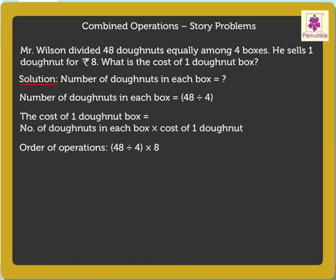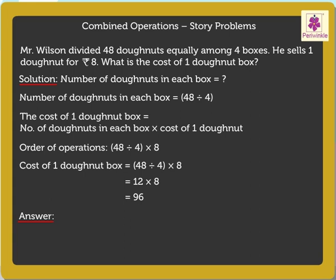Here, we use the division and multiplication operations to find the answer. The cost of one doughnut box is equal to 12 into 8, which is equal to 96. Thus, the cost of one doughnut box is 96 rupees.